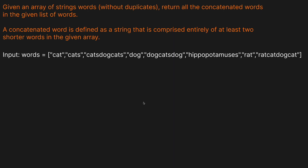So let's look at our words here. We have: cat, cats, catsdogcats, dog, dogcatsdog, hippopotamuses, rat, and ratcatdogcat.